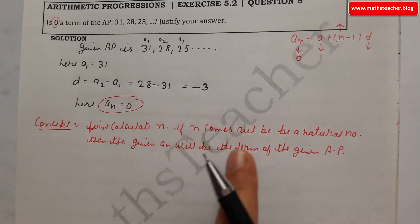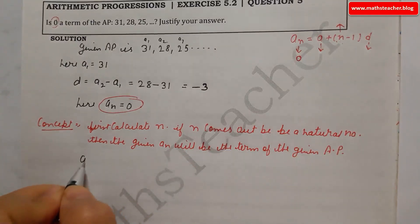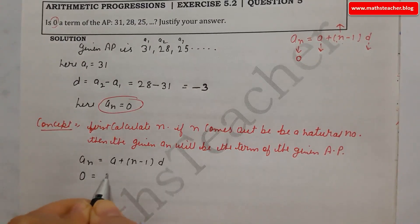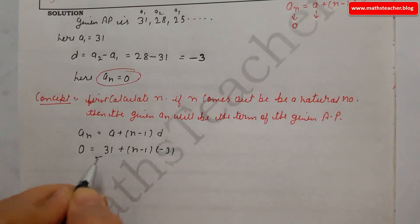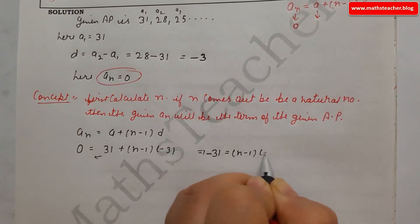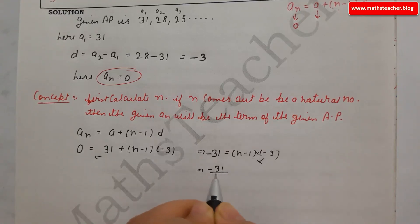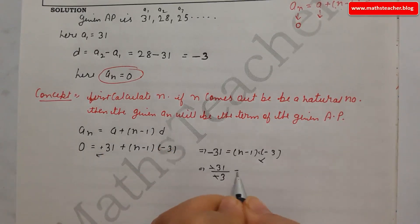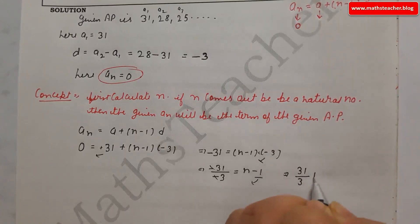First, calculate N. If N comes out to be a natural number, then the given AN will be a term of the AP. Using the formula: AN = A + (N − 1) × D, we get 0 = 31 + (N − 1) × (−3). So −31 = (N − 1) × (−3). Dividing both sides by −3 gives N − 1 = 31/3.